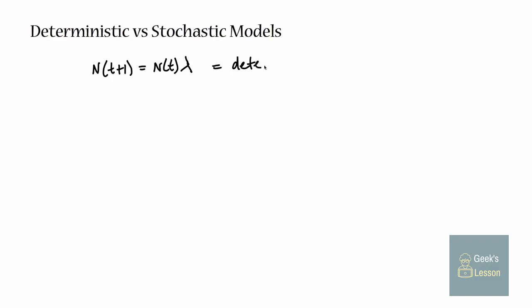A stochastic model is any model that has some element of randomness to it. Every time you run a simulation of the model, it'll come out different because somewhere in there is a random process. The stochastic equivalent of this model would be n at time t+1 is equal to n at time t times lambda_t, the growth rate at time t.